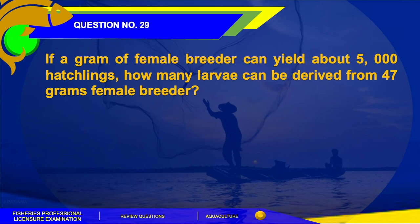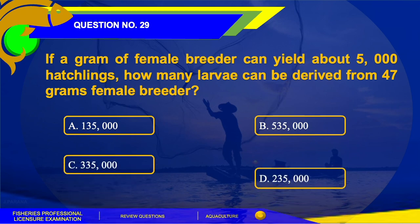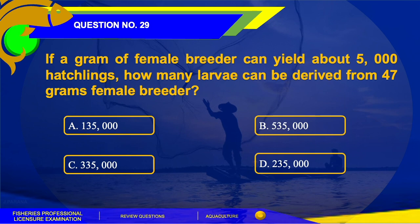Question number 29. If a gram of female breeder can yield about 5,000 hatchlings, how many larvae can be derived from a 47-gram female breeder? A. 135,000, B. 535,000, C. 335,000, or D. 235,000. The correct answer is letter D, 235,000. You need to multiply 5,000 by 47 grams of female breeder to get the answer.